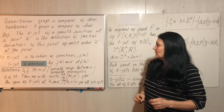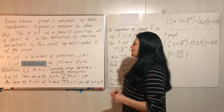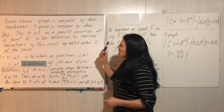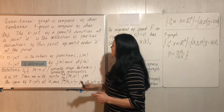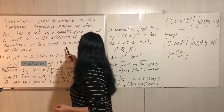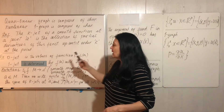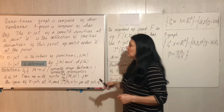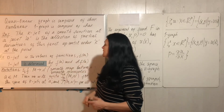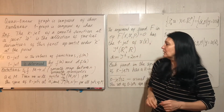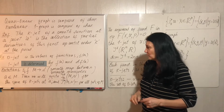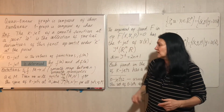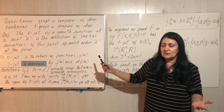We need some definitions. First definition: the k-jet of a smooth function at a point a is the collection of all partial derivatives of that function up to order k at that point. For example, the zero-jet is just the value of the function at the point, and the 1-jet is determined by the value of the function together with all its first partial derivatives.